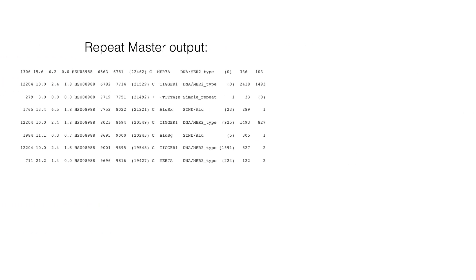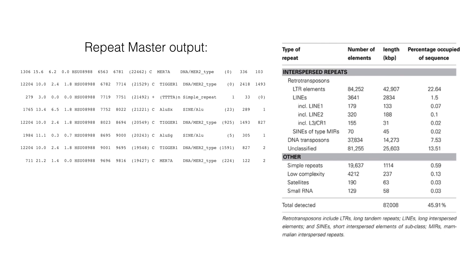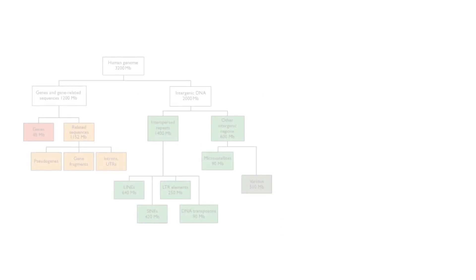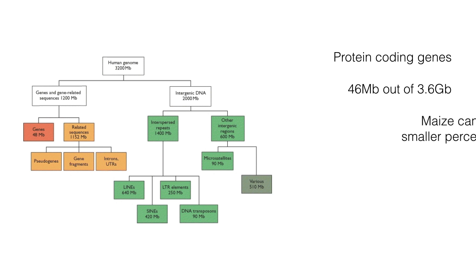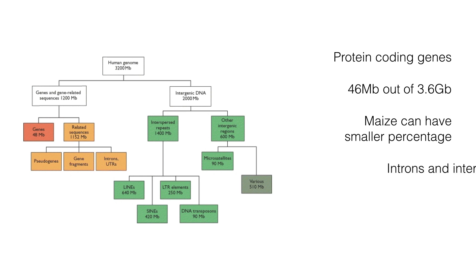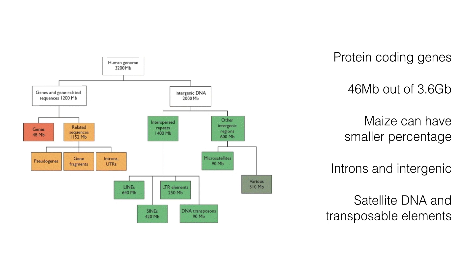Here you can see an output of the RepeatMasker search — a database of repetitive elements found and masked, and a summary table showing their percentages in the genome sequence. Protein coding genes are rare. In the human genome, they represent only 46 megabases out of 3.2 gigabases of the entire genome sequence. In other species like maize, the percentage could be even smaller. The majority of the genome is in the form of introns and intergenic sequence, including various types of repetitive elements, satellite DNA, and transposable elements.